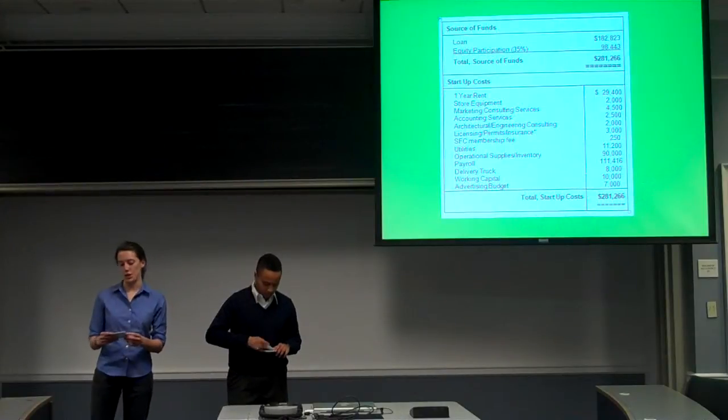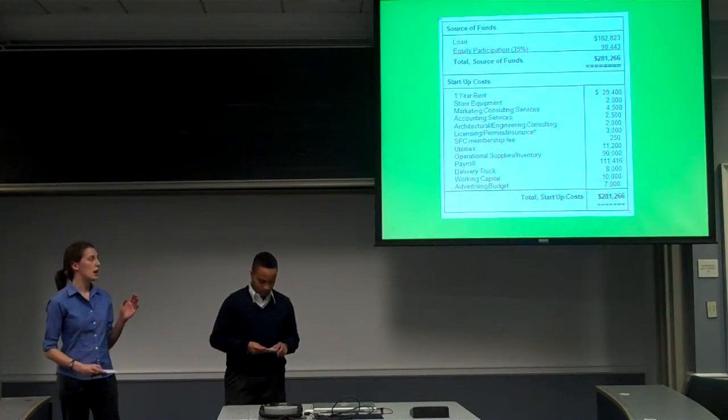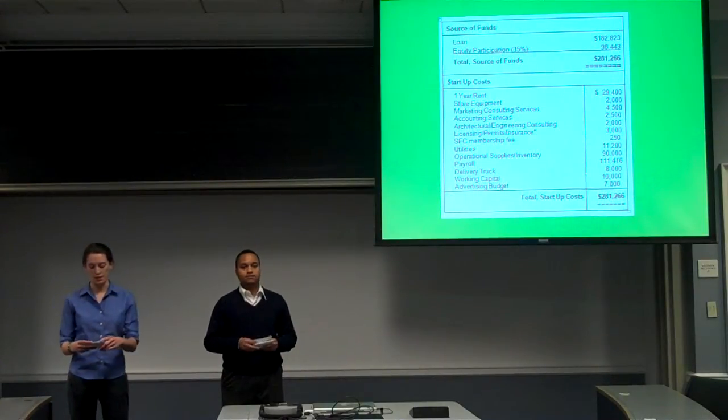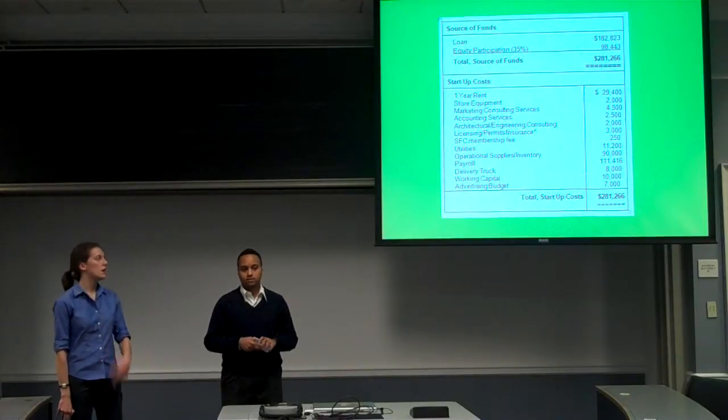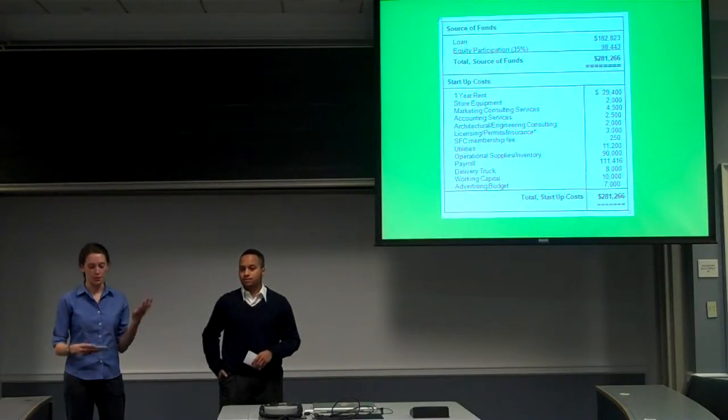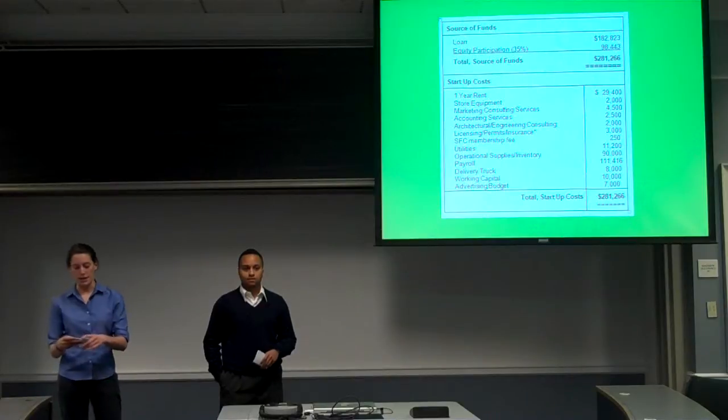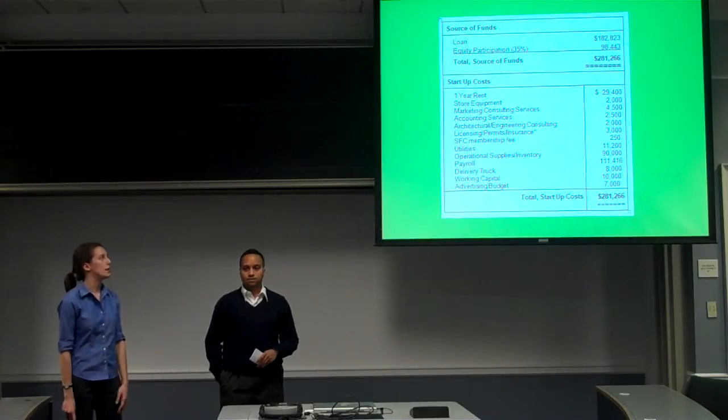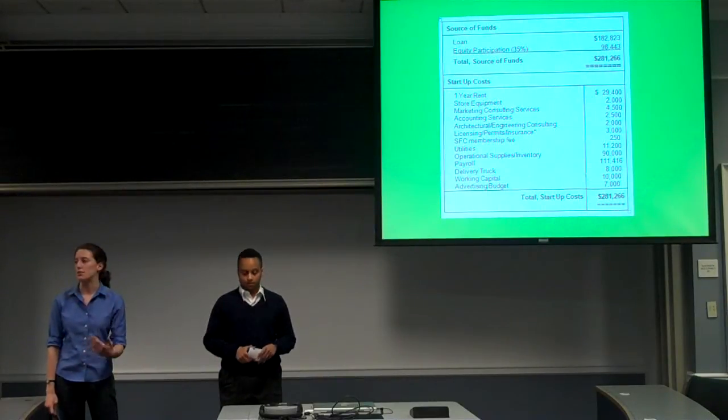Okay, so our initial costs for our first year are estimated at about $281,000. That includes making our storefront green using paints, lighting, and carpeting, and it also includes the cost of our biodiesel trucks and our Sustainable Furnishings Council membership.